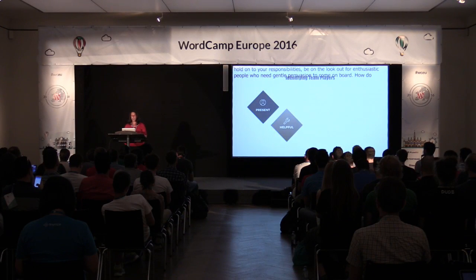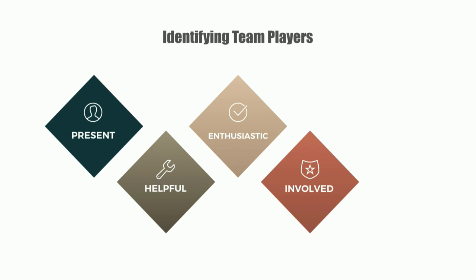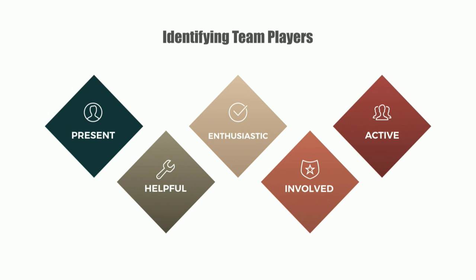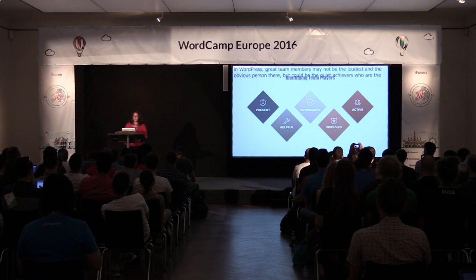When you've got a committed core organising group, it's really easy to get into a groove and forget that there might be other people who need to be included. Hold on lightly to your responsibilities and always be on the lookout for enthusiastic people who might just need some gentle encouragement to come on board. Team players are always around — they help without asking, they may be the first to arrive and the last to leave. Great team members may not always be the loudest, but could be quiet achievers who are loyal and regular attendees. They may need you to approach them and may actually be really excited when you ask them.